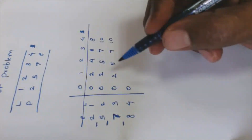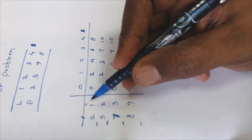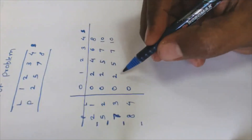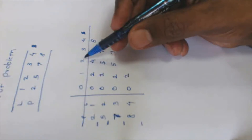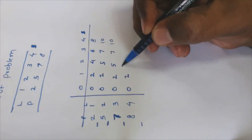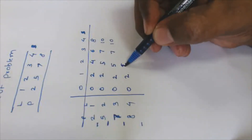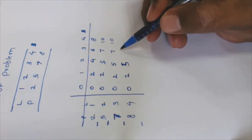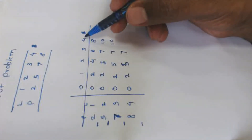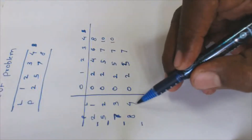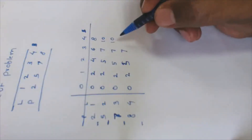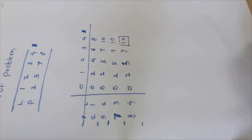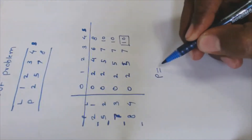Now with four options — rod lengths one, two, three, and four — the values for lengths one, two, and three stay the same: two, five, and seven. For a rod of length four, we compare selling it directly for eight versus the previously achieved ten. Ten is the best option, so the maximum profit is equal to ten.